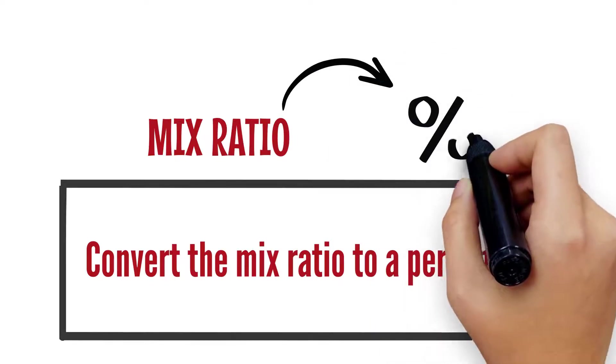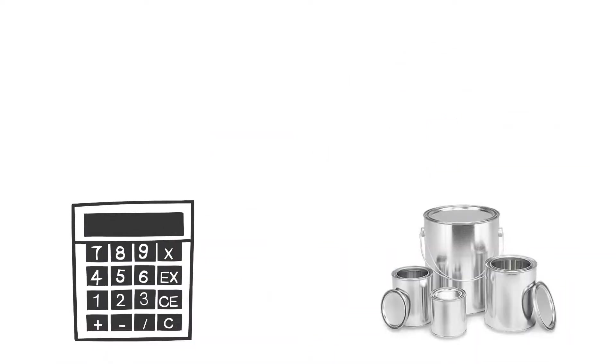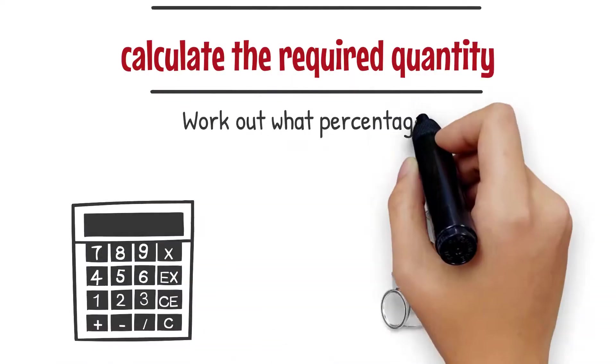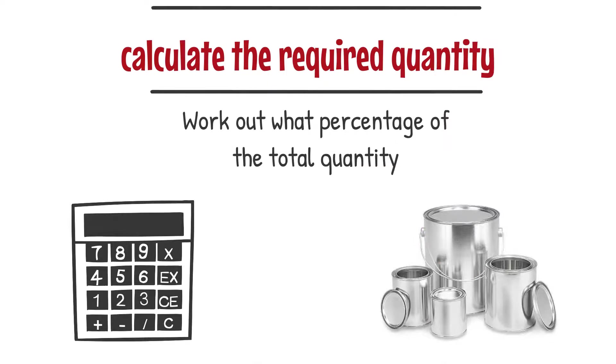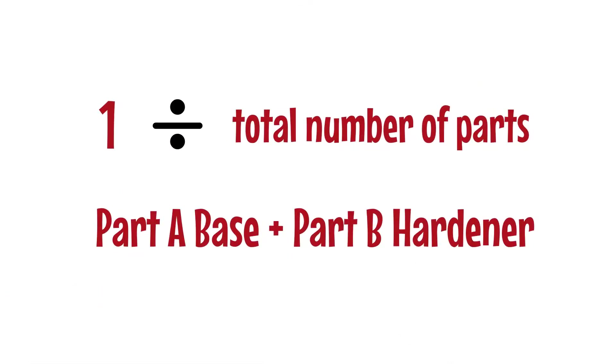Convert the mix ratio to a percentage. This trick will help you calculate the required quantity. Work out what percentage of the total quantity. Divide by the total number of parts—Part A base plus Part B hardener.